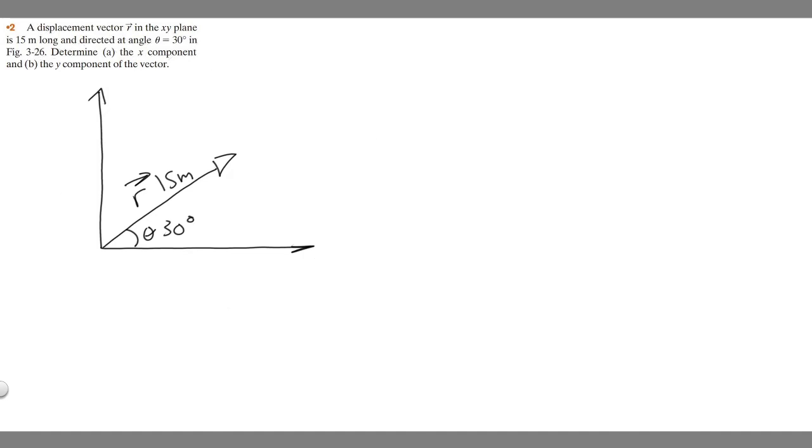So I drew the image in the book here. We have this vector here going off like this. We know it's 15 meters long. It's going to be at an angle of 30 degrees, because they tell us in this question it's 15 meters long and theta equals 30 degrees.